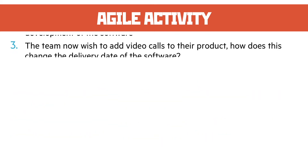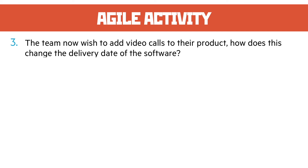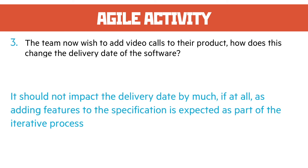Question three: the team now wish to add video calls to their product — how does this change the delivery date? It probably shouldn't impact on it at all. Maybe the change in working conditions might slow them down a little, but agile is very adaptive so the delivery date shouldn't change by much if at all. Adding features is expected as part of the iterative process — identifying new features and adding them as you go is all built into the timescales already.